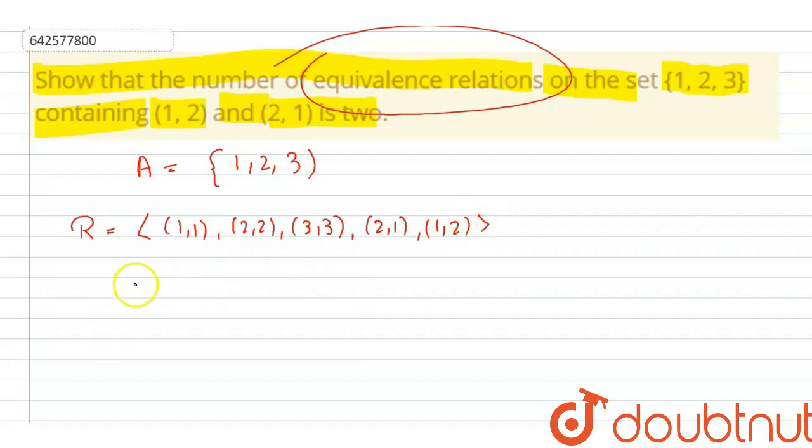And for being transitive, we have to add (2, 3), (3, 2), (1, 3), and (3, 1). Now if we add (3, 1) for being transitive, then we have to also add (1, 3). And if we add (2, 3), then we have to add (3, 2).